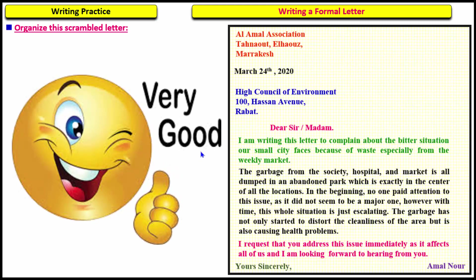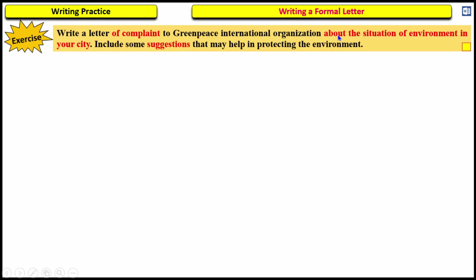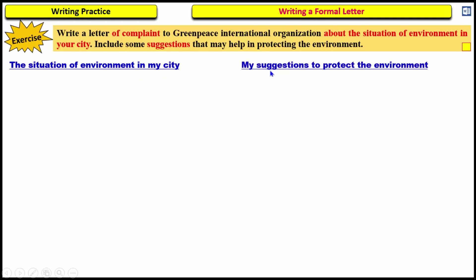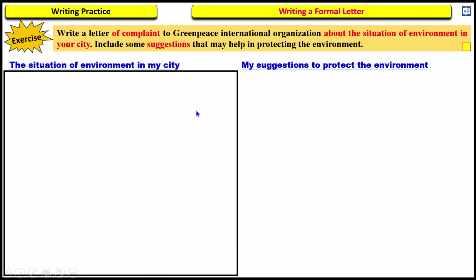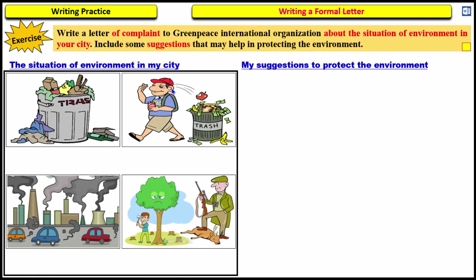Now that we know the elements and layout of a formal letter, let's write one ourselves. The topic is: write a letter of complaint to Greenpeace International Organization about the situation of the environment in your city, and include some suggestions that may help in protecting the environment. You will need to describe the environmental situation and give suggestions. Pause the video, take a pen and paper, and write the ideas you see in the pictures.